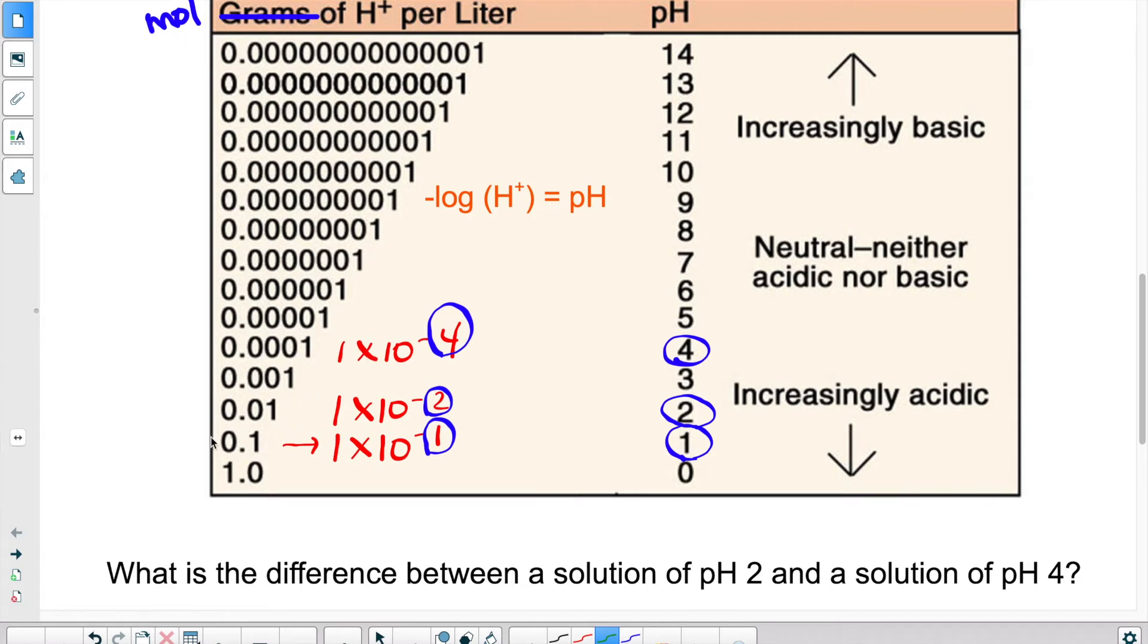The same way, if something has a concentration, if a solution has a concentration of 0.1 H plus ions in a solution, well, it's 1 times 10 to the negative 1, so it corresponds to a pH of 1. So you can see here,